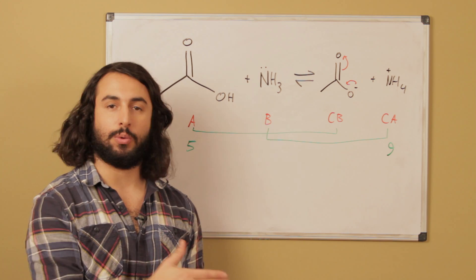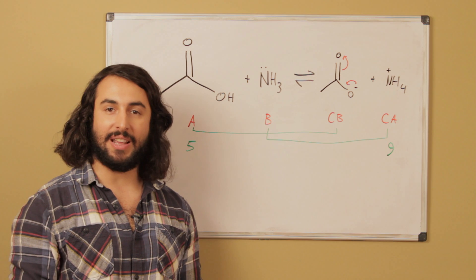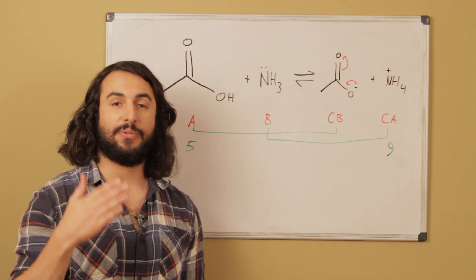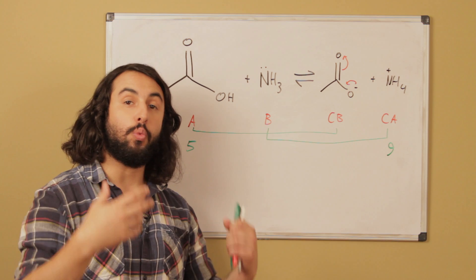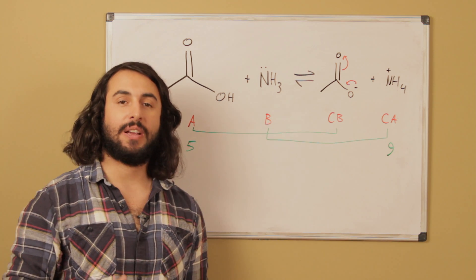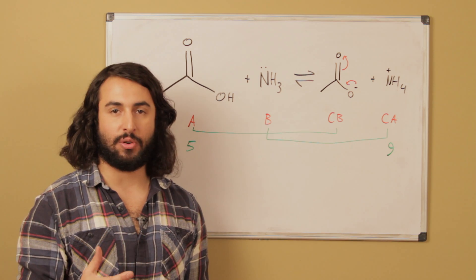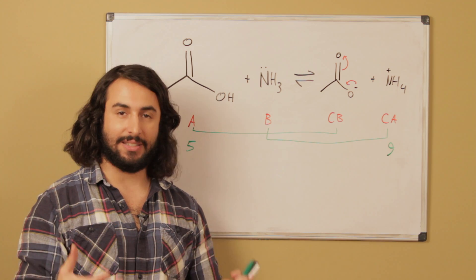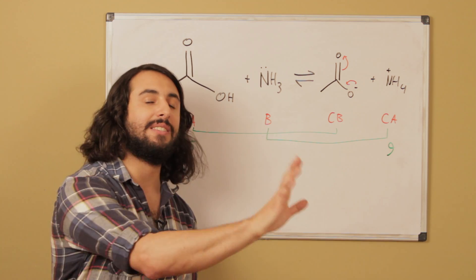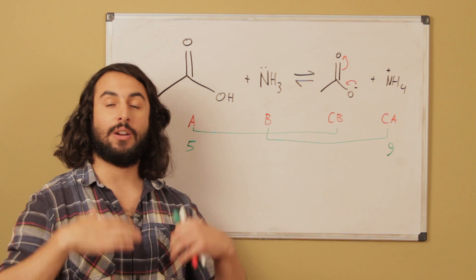The second thing we want to do is be able to predict the direction of the equilibrium. When you have an acid-base equilibrium like this, it is always going to favor the side that has the weaker acid-base pair. When we're looking at acid strength, the stronger an acid is, the greater the tendency it has to get rid of its proton. The weaker it is, the less likely it is to get rid of its proton.